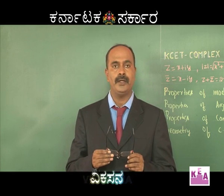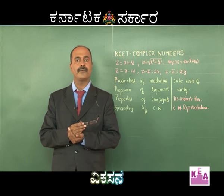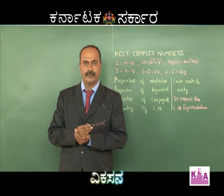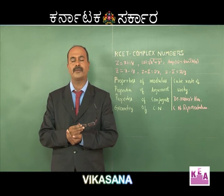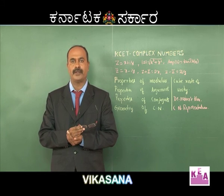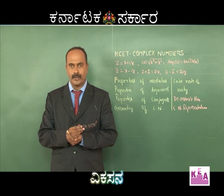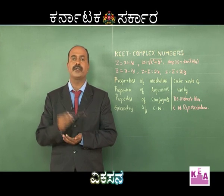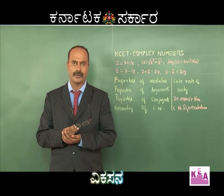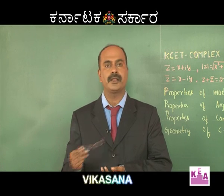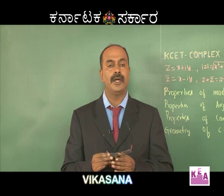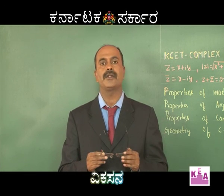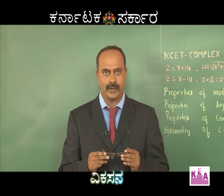Coming to the properties of argument: arg(z₁·z₂) = arg(z₁) + arg(z₂). arg(zᵖ) = p·arg(z). arg(z₁/z₂) = arg(z₁) − arg(z₂). Conjugate of (z₁ + z₂) is conjugate of z₁ plus conjugate of z₂. And conjugate of (z₁/z₂) is conjugate of z₁ divided by conjugate of z₂.